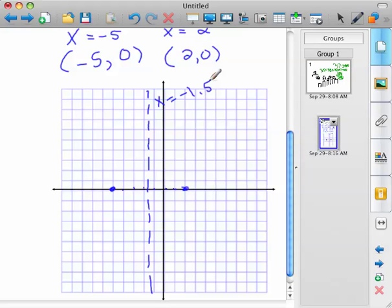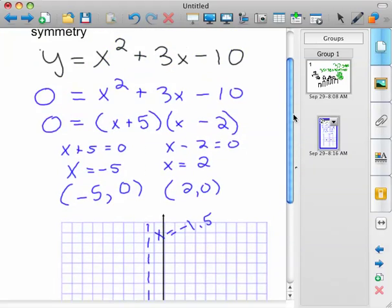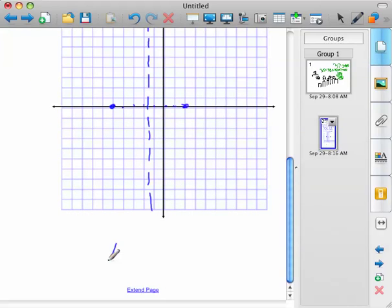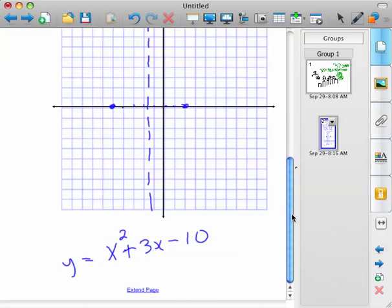So x equals negative 1.5, so you can plug in the 1.5 to find your vertex into the original equation. So, my original equation was x squared plus 3x minus 10. And if you plug in, somebody do that for me, put in negative 1.5 into that, or maybe you already have.